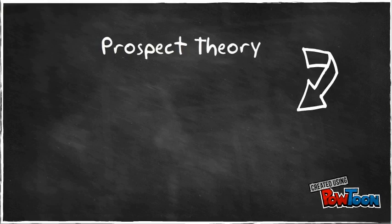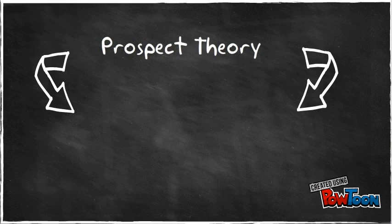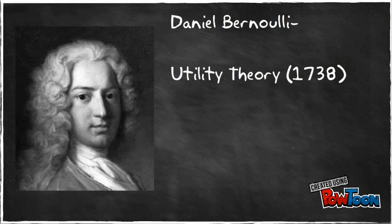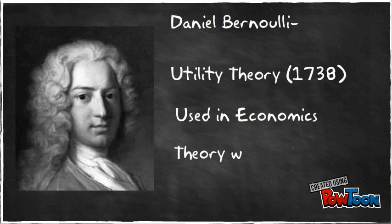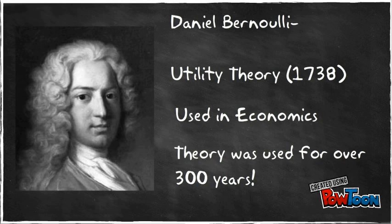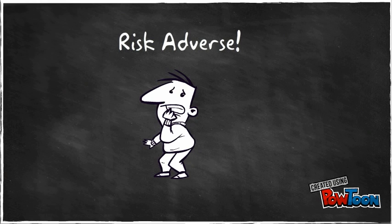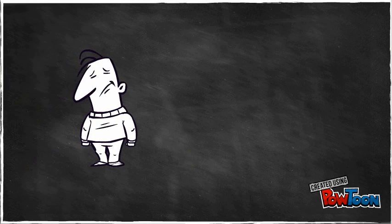Before we talk about Prospect Theory, we have to first discuss its predecessor, Utility Theory. Utility Theory was proposed in 1738 by the Swiss mathematician Daniel Bernoulli. It was known as Moral Expectation, as opposed to the Theory of Mathematical Expectation, until the mid-20th century.